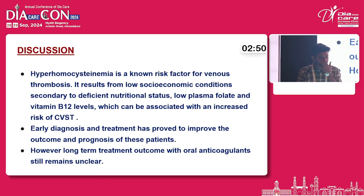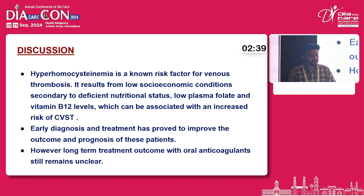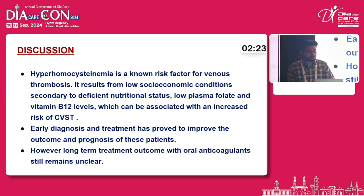Hyperhomocysteinemia is a known risk factor for venous sinus thrombosis. It results from low socioeconomic conditions secondary to nutritional status, dehydration, low plasma folate, and vitamin B12 levels, which can be associated with increased risk of cerebral venous sinus thrombosis. Early diagnosis and treatment has proved to improve outcomes and prognosis, however, long-term treatment outcome with oral anticoagulation is still under trial.